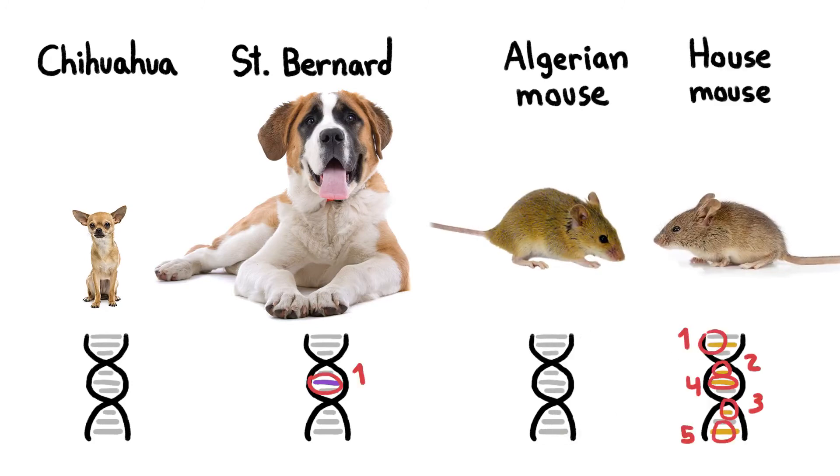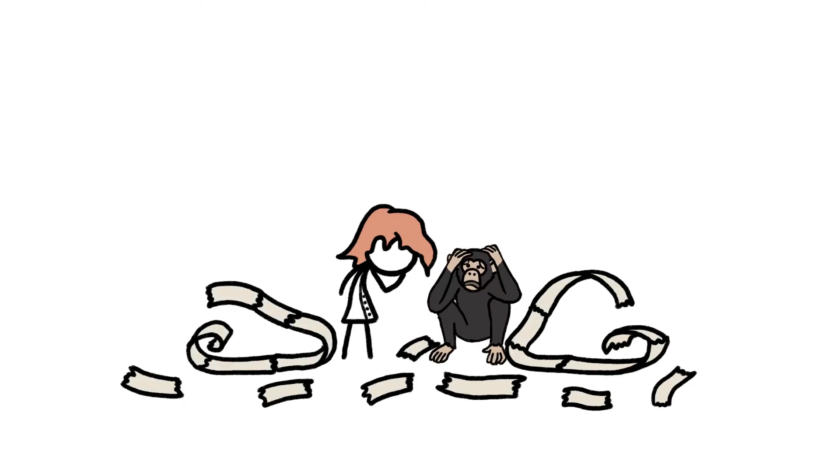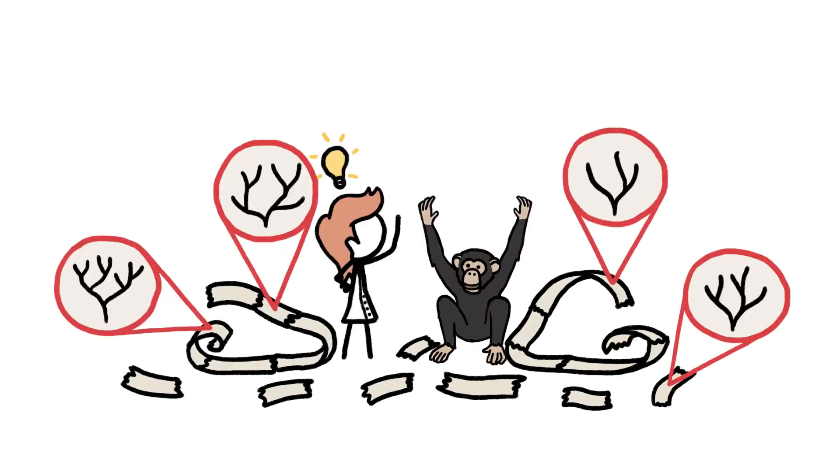So just counting up the number of genetic changes doesn't really tell us that much about how similar or different two creatures are. But that doesn't mean we can't learn anything by comparing their genomes. DNA contains a record of the evolutionary relationships between all organisms.